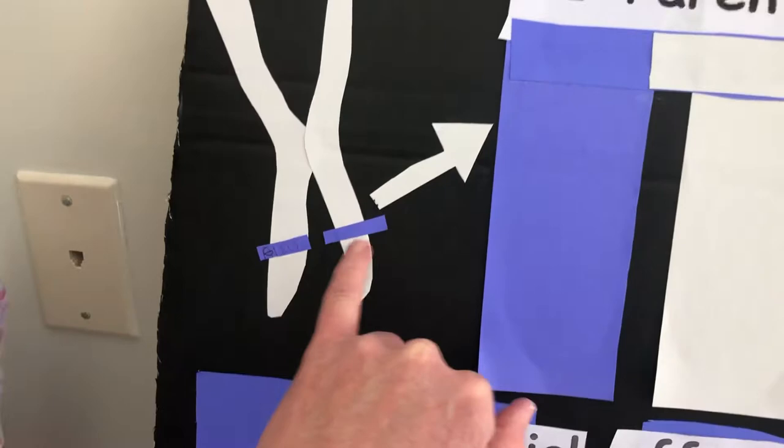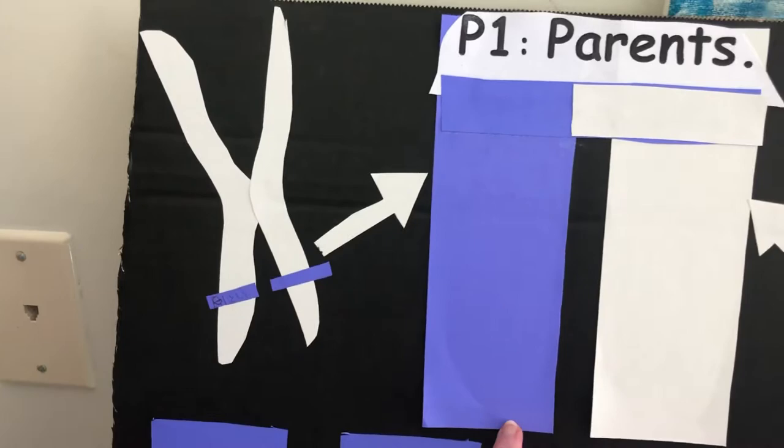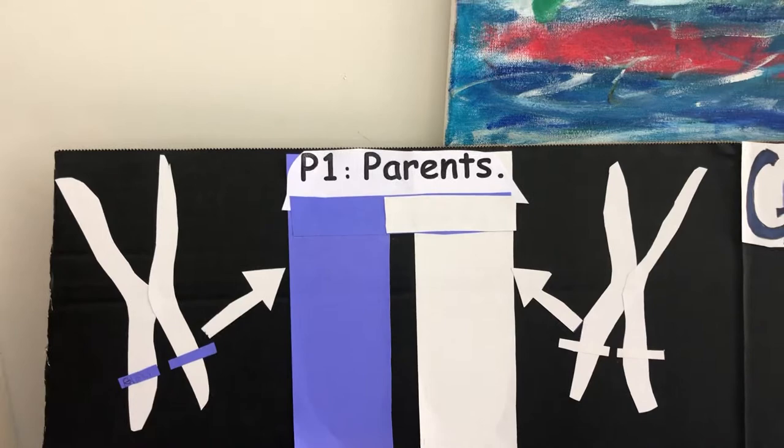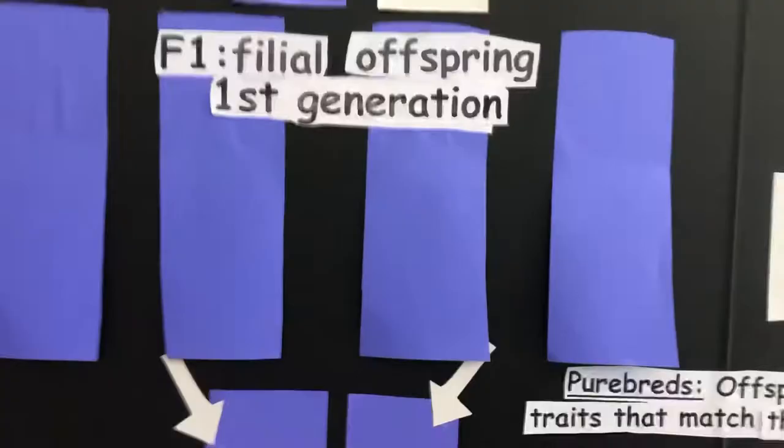What he noticed is that when those parents — the P1 generation — had offspring, it produced all purple flowers. He called it the F1, filial, first generation. And all of them had purple flowers. But what happened to the white flower? Why are they all purple? How come the white flower is not here? They are — they're just hidden because the purple is a dominant color.